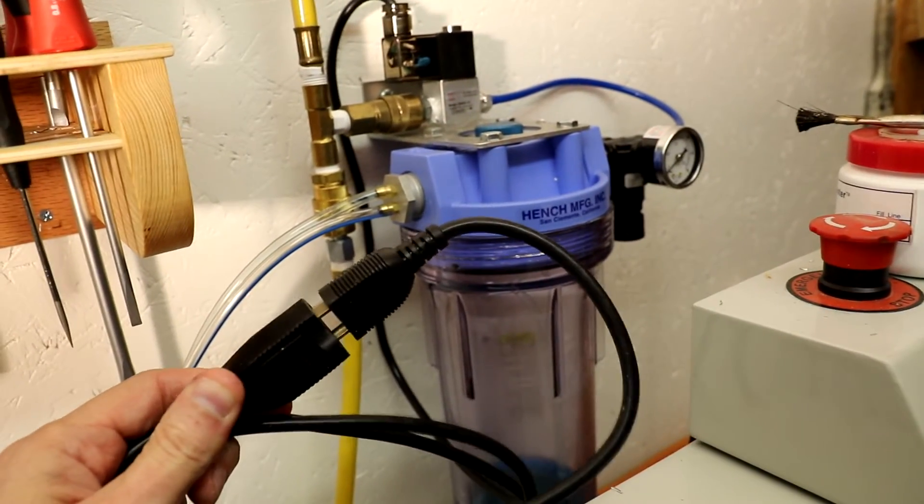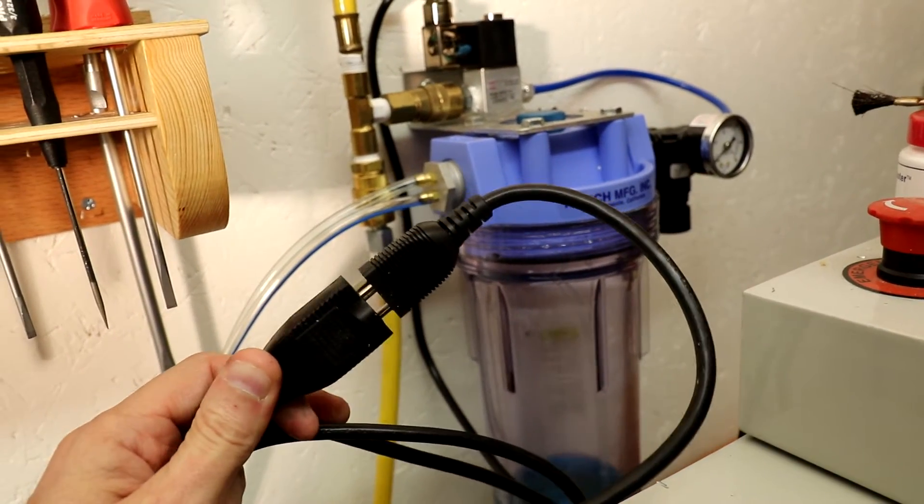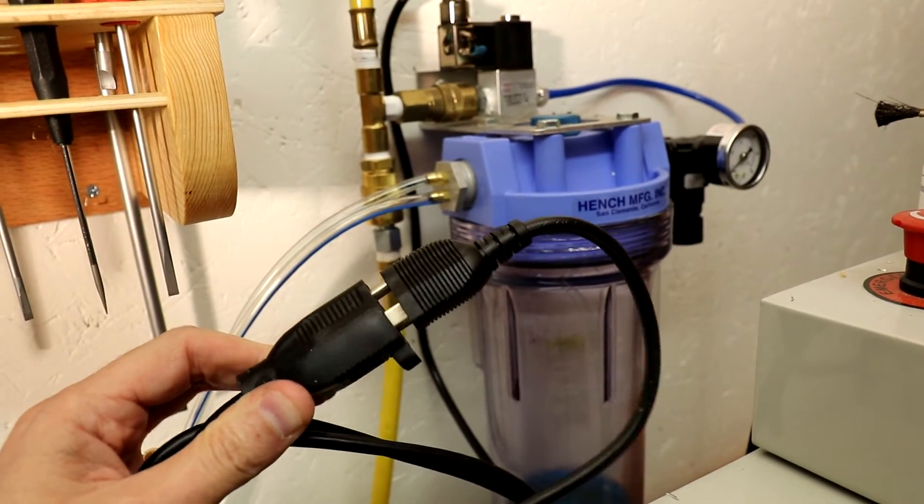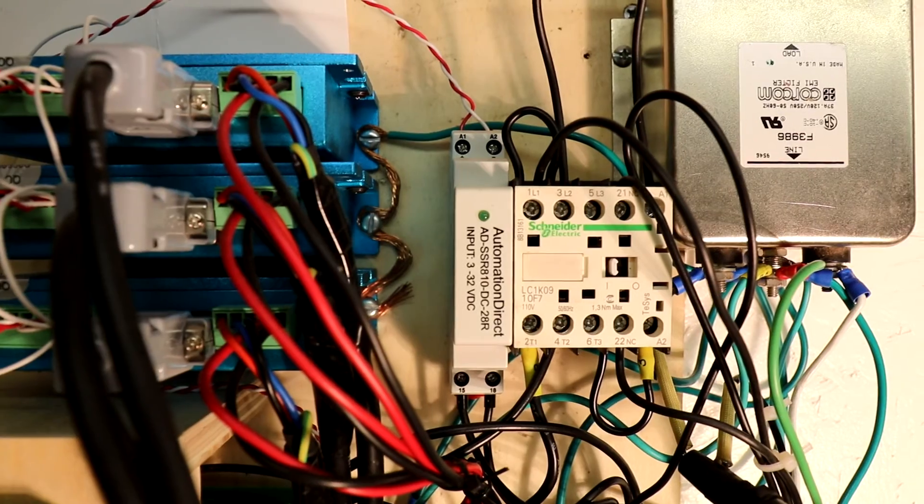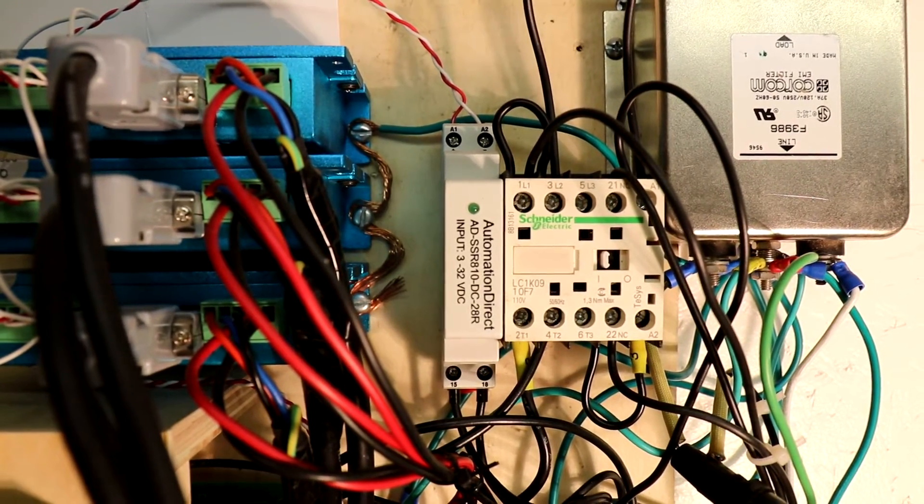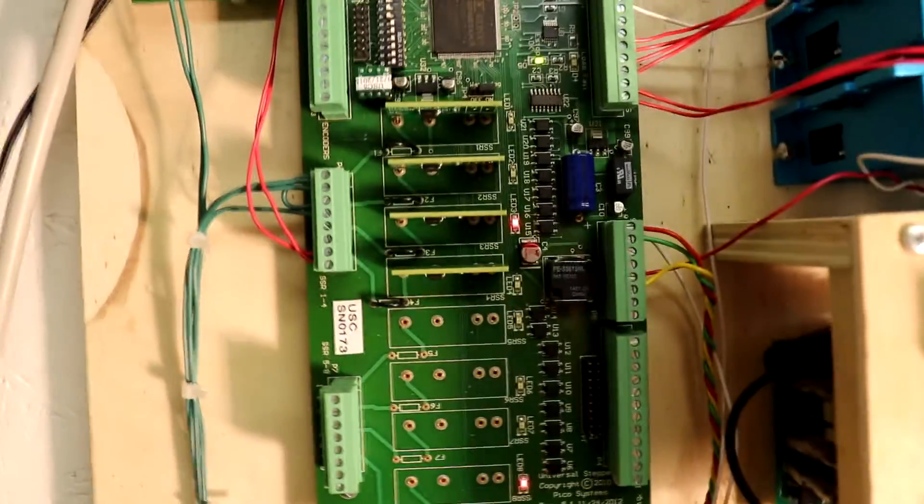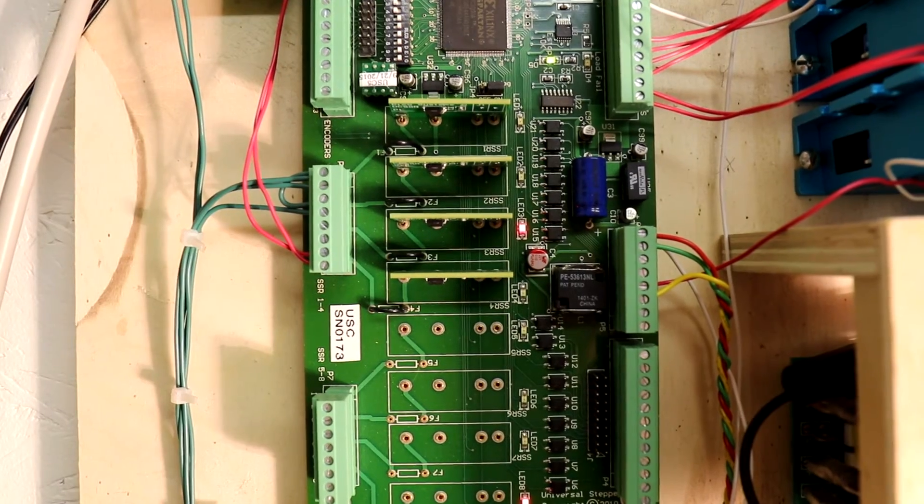The solenoid comes pre-wired with a 120 volt plug. To preserve that plug I attached it to an extension cord and then cut the opposite end of the extension cord off and wired it to a solid-state relay. The solenoid requires 120 volts and to control that I got a solid-state relay from AutomationDirect.